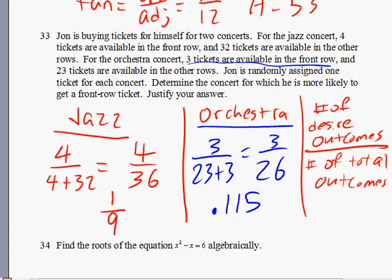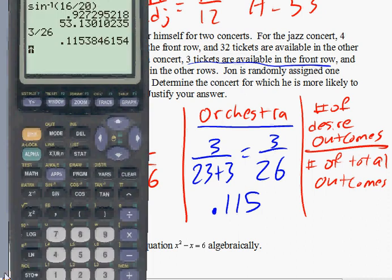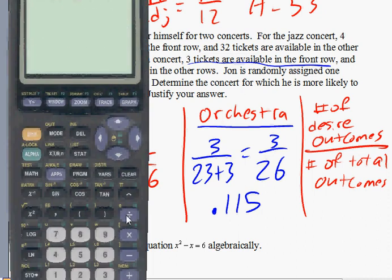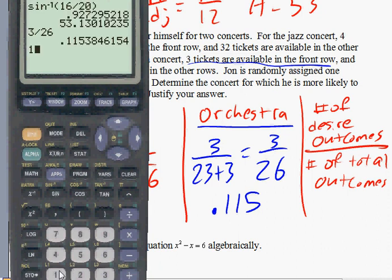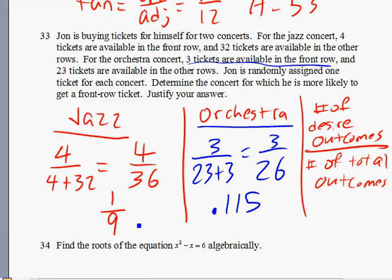And one-ninth if you want to get the exact decimal space, one divided by nine is approximately point one-one-one. Which one gives you better odds? The orchestra ticket gives you slightly better odds. There you go. Feel free to comment or ask questions below.